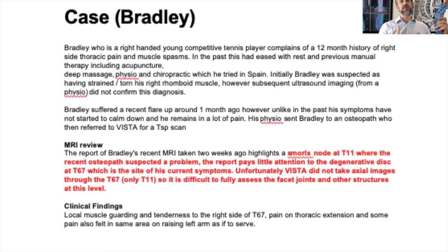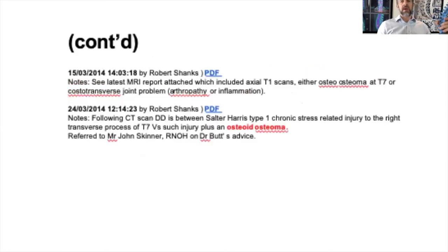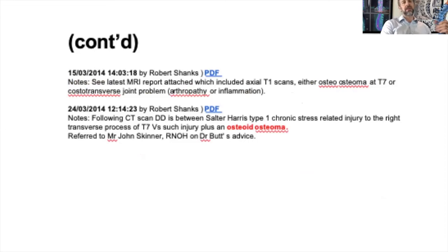It was the first time anybody had told them that, because nobody had actually looked at the images — they had the report and they'd relied on that. That illustrates the importance of why we as manual therapists should have as much knowledge and understanding of this process as possible. I wrote a letter and got him re-scanned with axial slices through the affected area. Unfortunately, what came back was that he had an osteoma — there was a tumour there. I referred him on to the sarcoma unit, and as far as I know, he did well. We only really knew about it by asking for that re-examination.